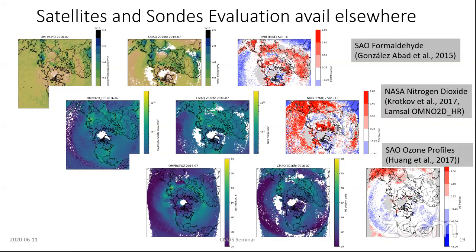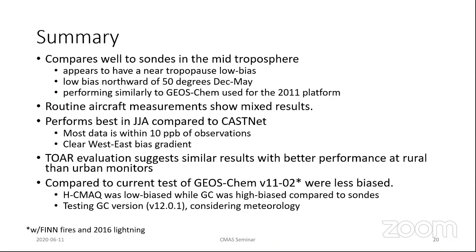If you're interested in looking at different months, what I'm showing here is July, but we did that for other months as well. In general, the model is doing really well. It does tend to have a near-tropopause low bias, and that low bias tends to be northward of 50 degrees. It's performing similarly overall to the GEOS-Chem platform used for our 2011 system, but it definitely shows some low biases that we'd like to better understand and improve.